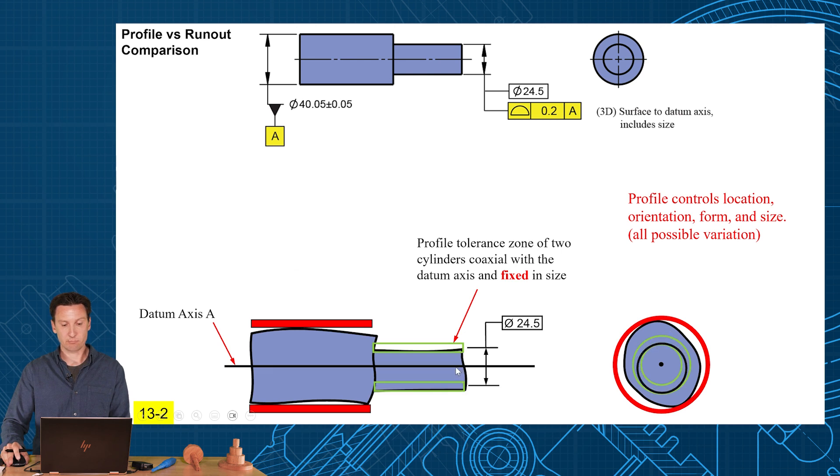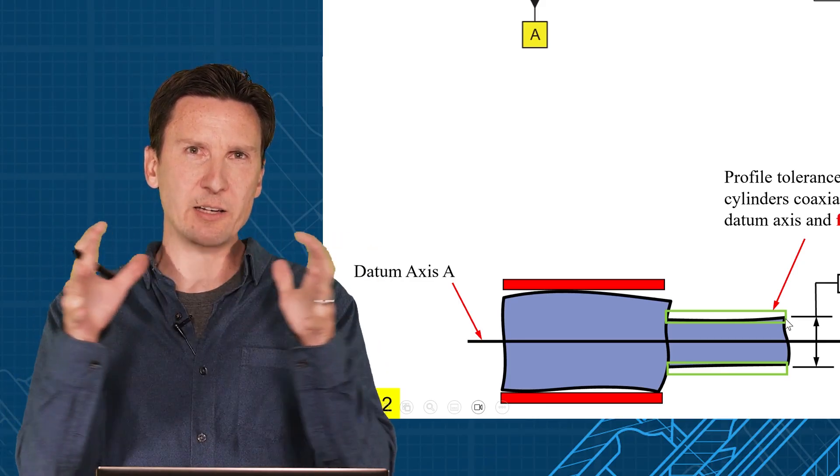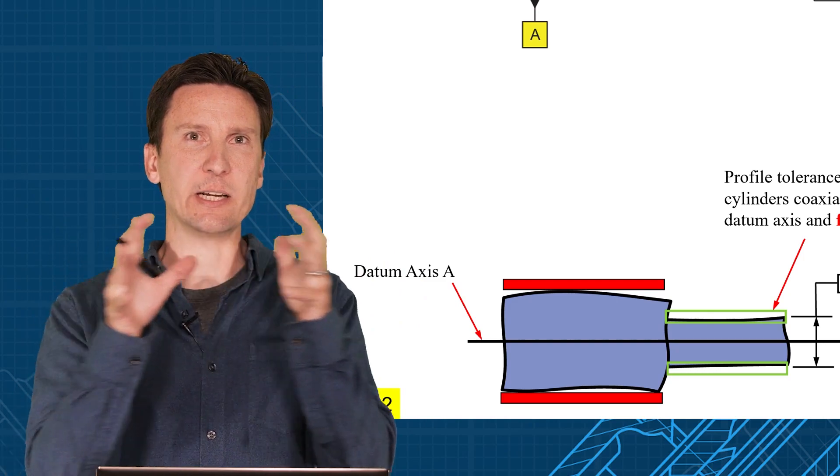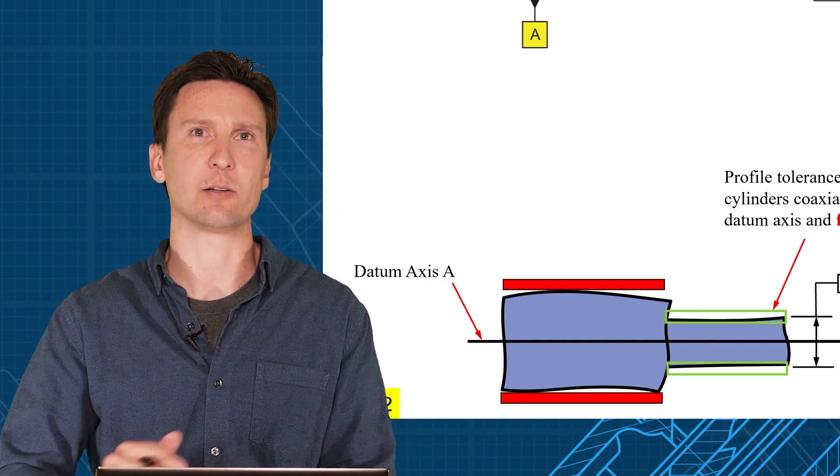Now this is going to control all the variation on the feature. It controls how centered it is. See if it's off-center this way or off-center that way, you're going to fail your profile tolerance if it's too far out. Also, it controls size at the same time, too small or too big, that could fail the profile tolerance. So profile is controlling the size and the coaxiality in the same shot, in the same tolerance zones.